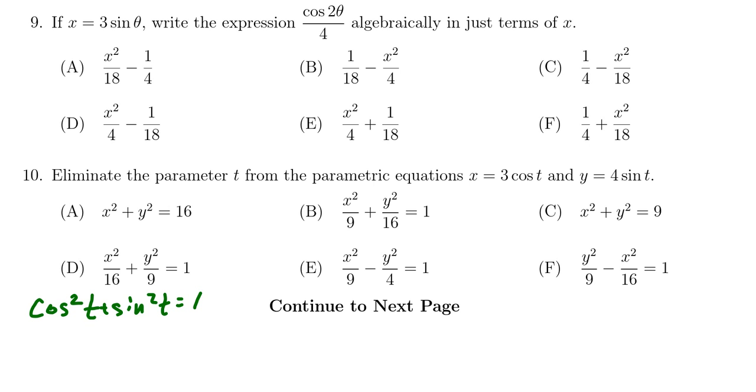And so if you solve for cosine and sine in this situation, you get cosine t is equal to x over 3. You get sine t is equal to y over 4.